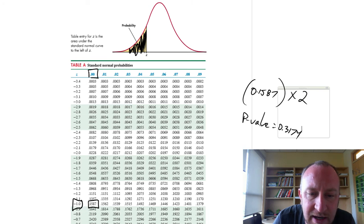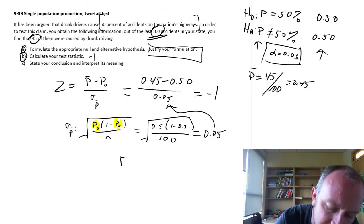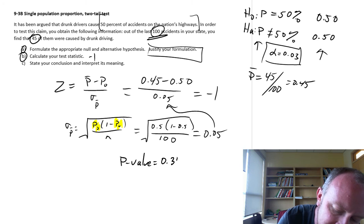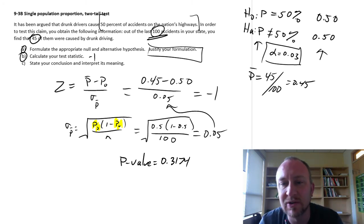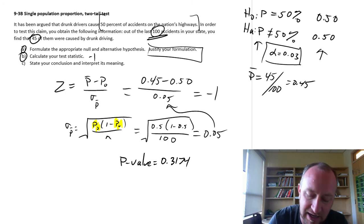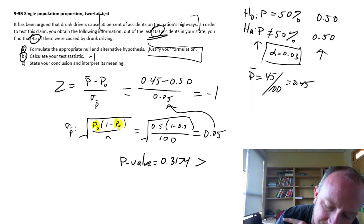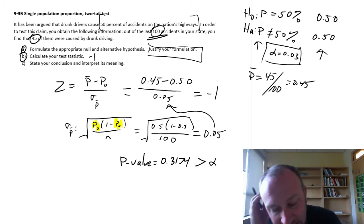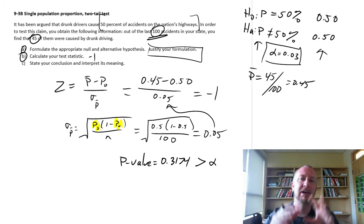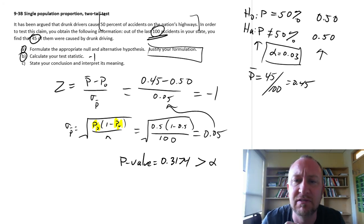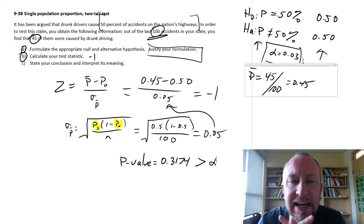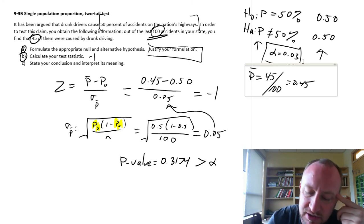So coming back to our problem with a p-value of 0.3174. Are we going to reject or not? Absolutely not. That is so much greater than alpha. 0.03, 0.05, 0.1. Alpha could have been really any reasonable number, and we would still fail to reject.